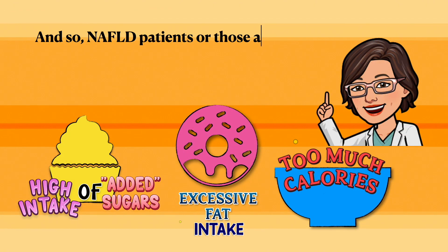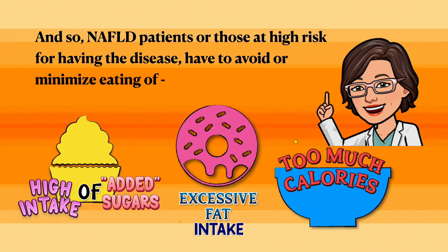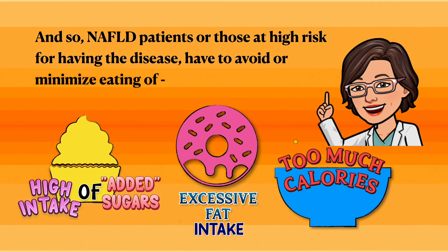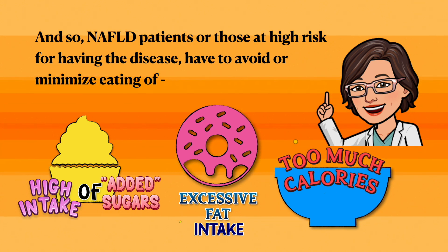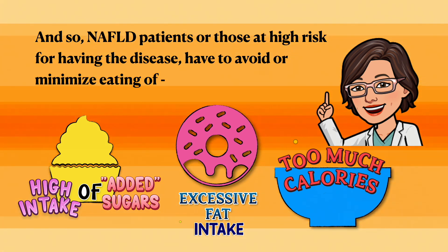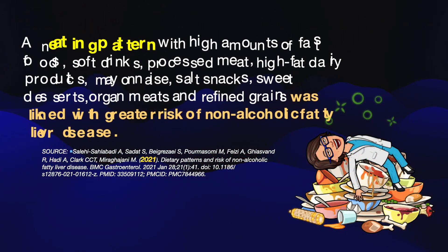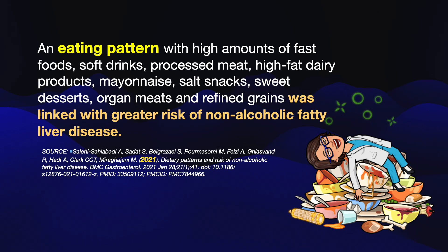NAFLD patients or those at high risk should avoid or minimize eating foods with added sugars, excessive fat intake, and too many calories. An eating pattern high in fast foods, soft drinks, processed meats, high-fat dairy products, mayonnaise, salty snacks, sweet desserts, organ meats, and refined grains was linked with greater risk of NAFLD.